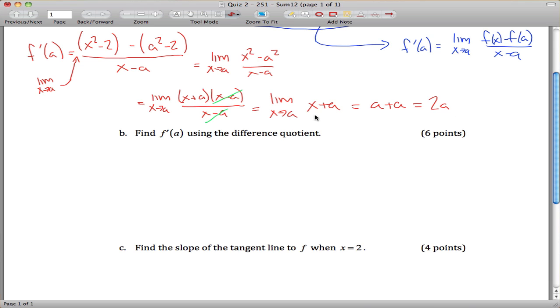Now find, get that same answer, but use the difference quotient to get it. Difference quotient tells us that f prime of a is equal to the limit as h approaches 0 of f of a plus h minus f of a all divided by h.